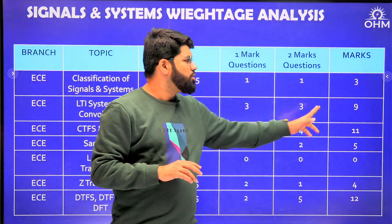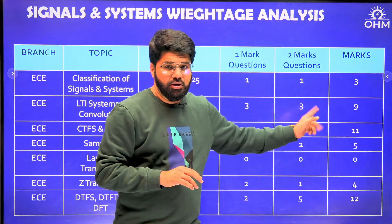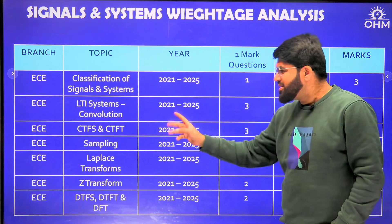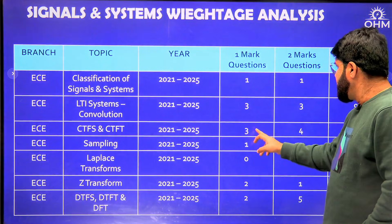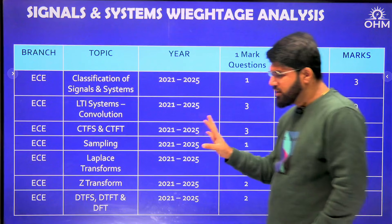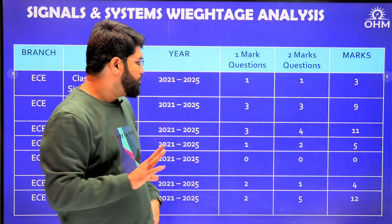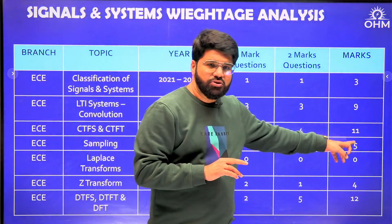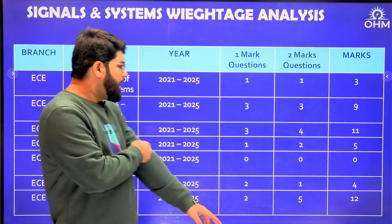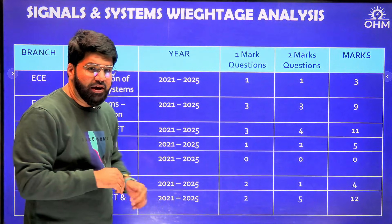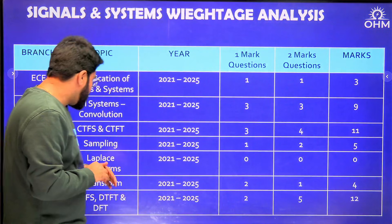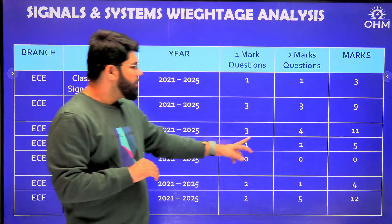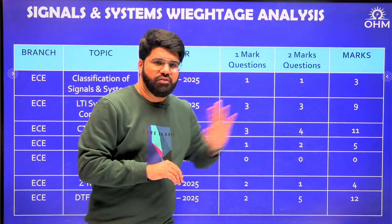LTI systems — especially convolution and its properties — have three questions of one mark and three questions of two marks, totaling nine marks, which is a decent number. CTFS and CTFT combined have three questions of one mark and four questions of two marks, totaling eleven marks, giving it a better weightage. Sampling, separated from Fourier transform, has one question of one mark and two questions of two marks — five marks total.